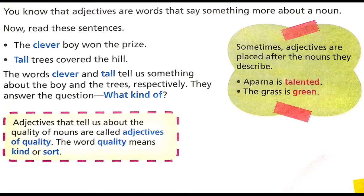Adjectives that tell us about the quality of nouns are called adjectives of quality. The word quality means kind or sort. That means 'what kind of' is being told in adjectives of quality.